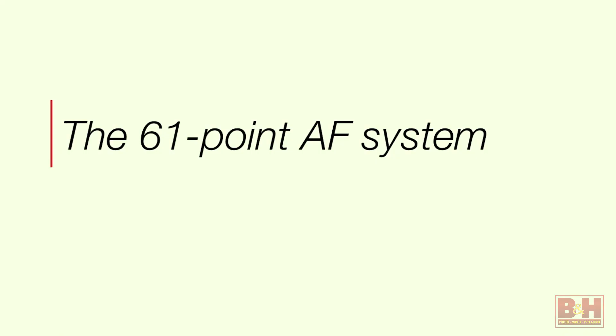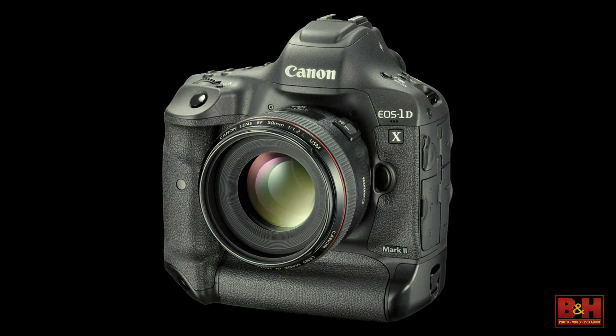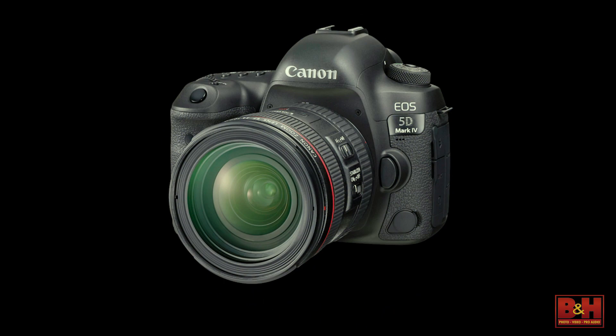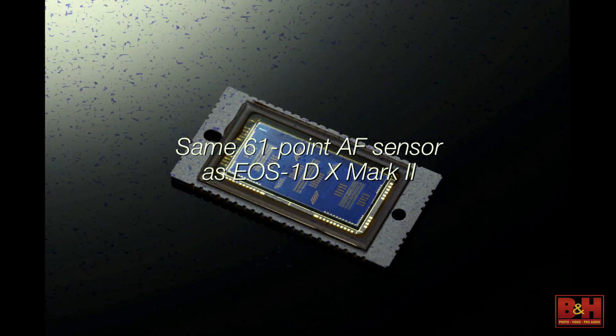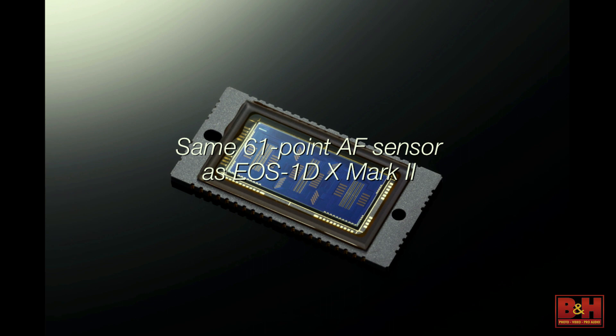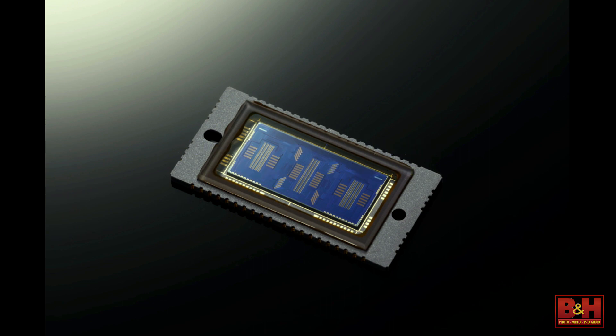The focusing system — the 61-point focusing system when shooting through the viewfinder — looks the same as the 5D Mark III, but it isn't. It actually is the same focusing sensor as in the top-of-the-line EOS 1DX Mark II camera. This will give you a couple of important benefits. It's still 61 focusing points, so you might think not much has changed compared to your Mark III — but a number of things have with this new focusing sensor.